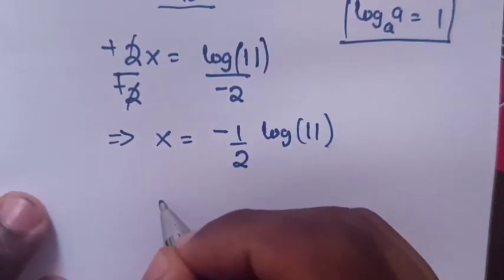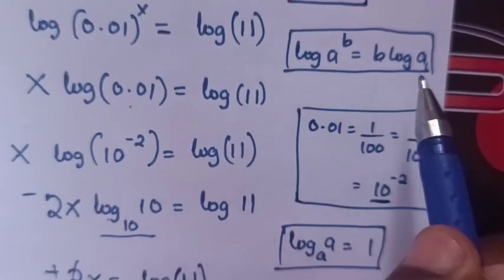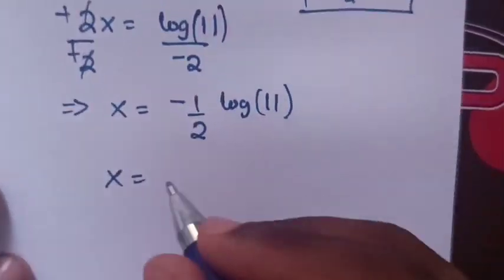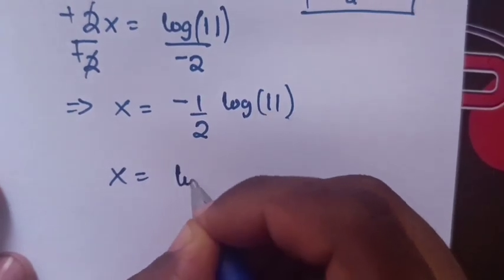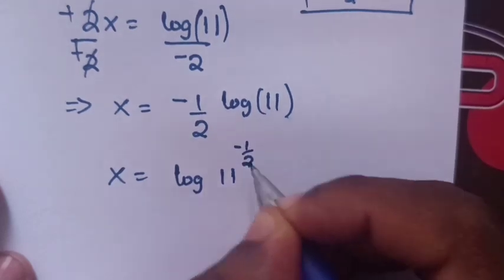Now, x equals (-1/2)·log(11), and we can move the coefficient to the power according to this rule. So it becomes x = log(11^(-1/2)).